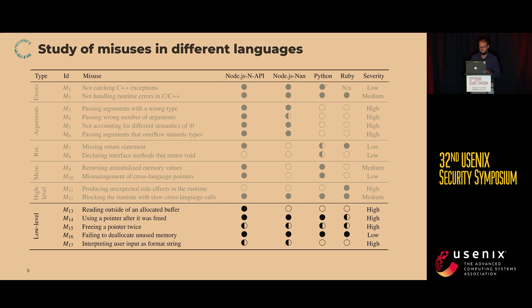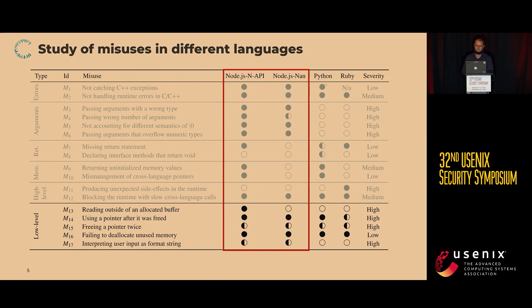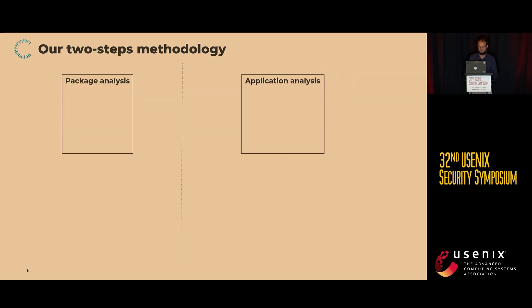What stands out is that Node.js is the most permissive of the three runtimes, and this could cause confusion in developers' minds and lead to all kinds of vulnerabilities. This was our speculation at the end of the empirical study, and we proposed a two-step methodology to see if these subtle problems with native extensions could lead to end-to-end problems in web applications.